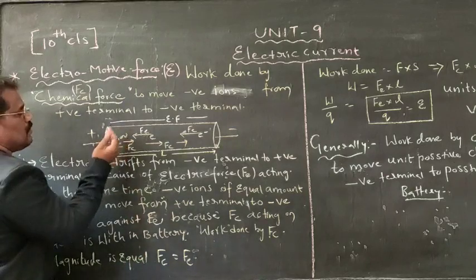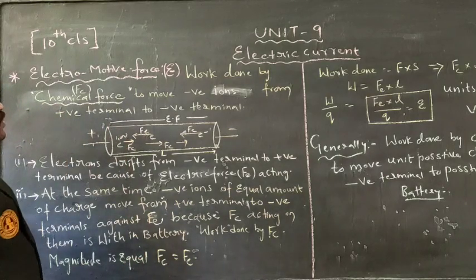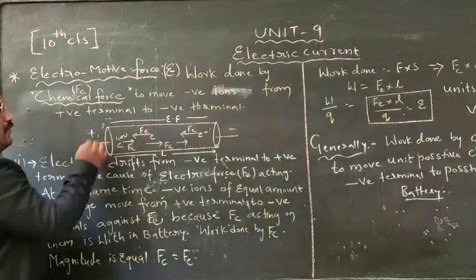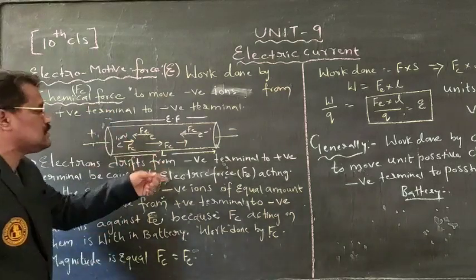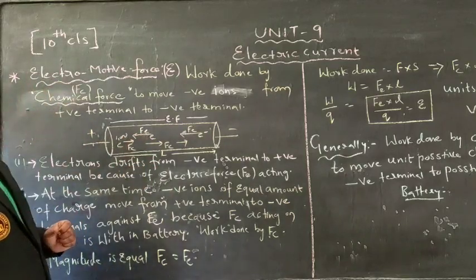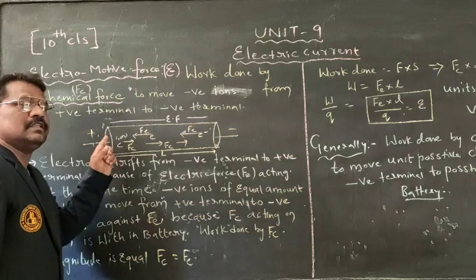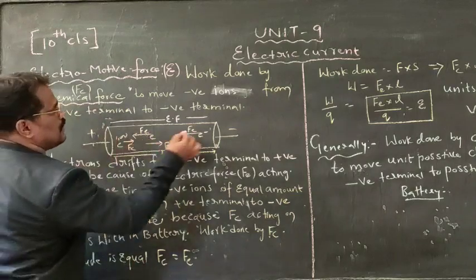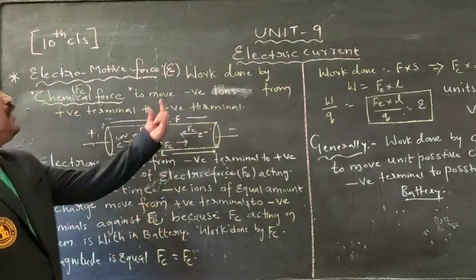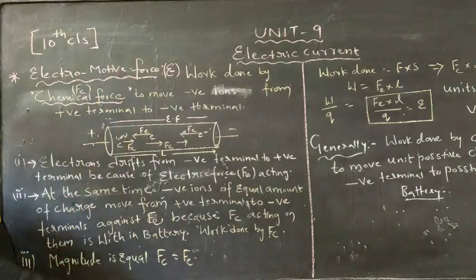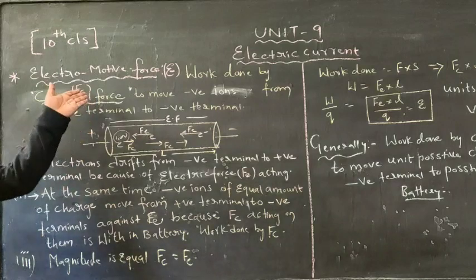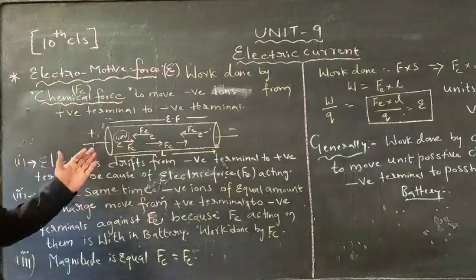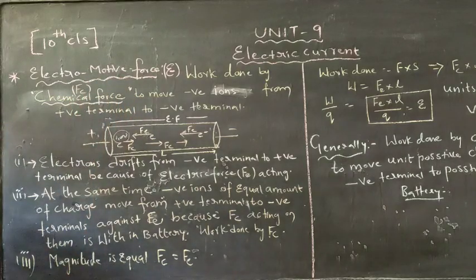So the nearby electrons will drift towards the positive terminal. To take out the negative ions from the positive terminal, the battery will be doing work. The battery's chemical energy — that is, chemical force — will be applied upon the negative ions to drag them from the positive terminal to the negative terminal. This force applied is called chemical force, and it is called electromotive force.